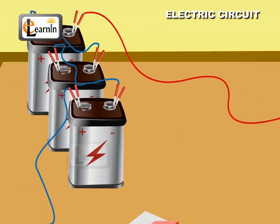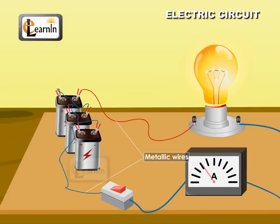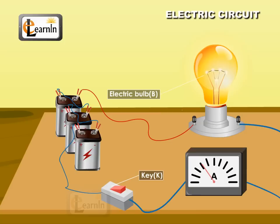If these electrodes are connected by a metallic wire to a number of instruments like a key, electric bulb, etc., it's called an electric circuit.